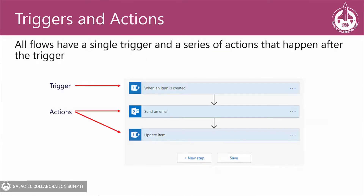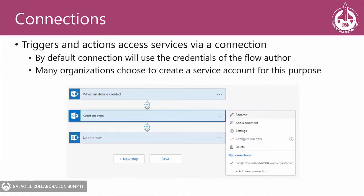Each connector implements a set of triggers and actions, which you use when building your flows. Each flow has a single trigger — that's what starts the flow process running — and then one or more actions, which implement the logic or functionality in the flow. Not all triggers and actions connect to a service; however, for those that do, you need to indicate the set of credentials you use to authenticate with that service.